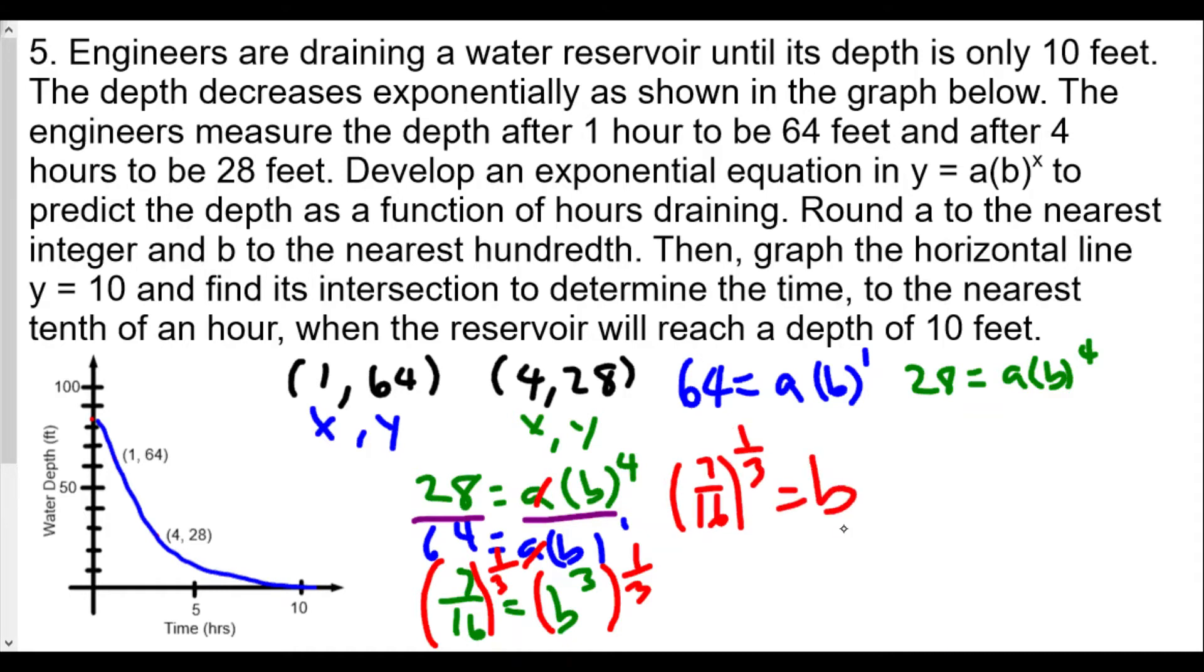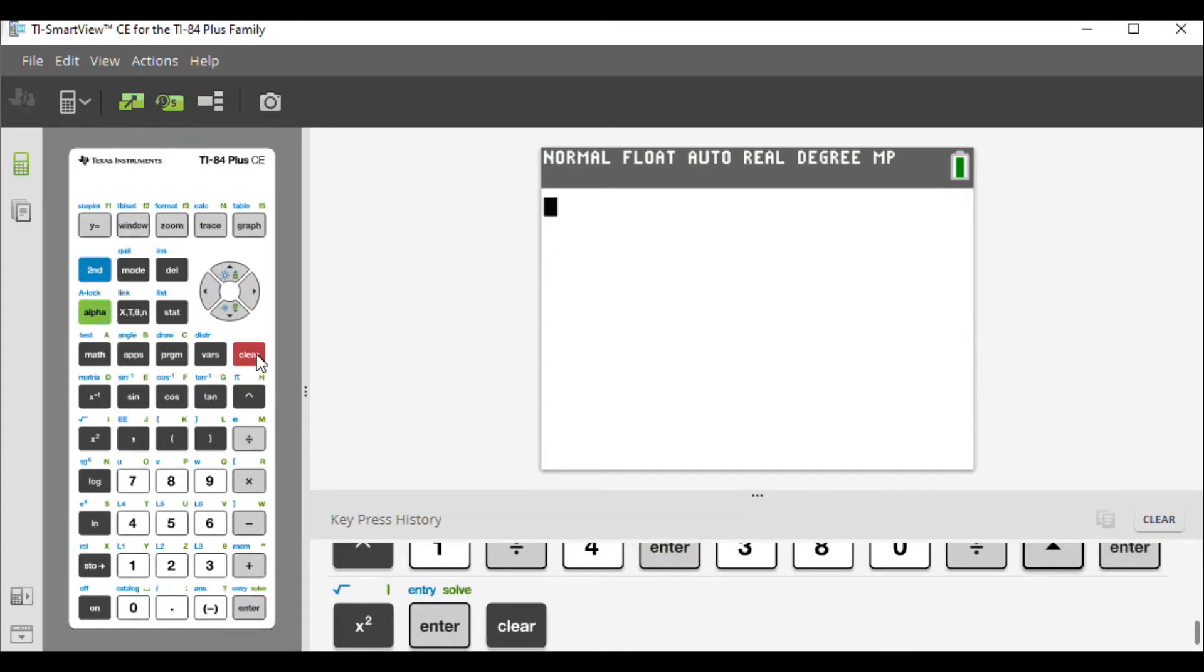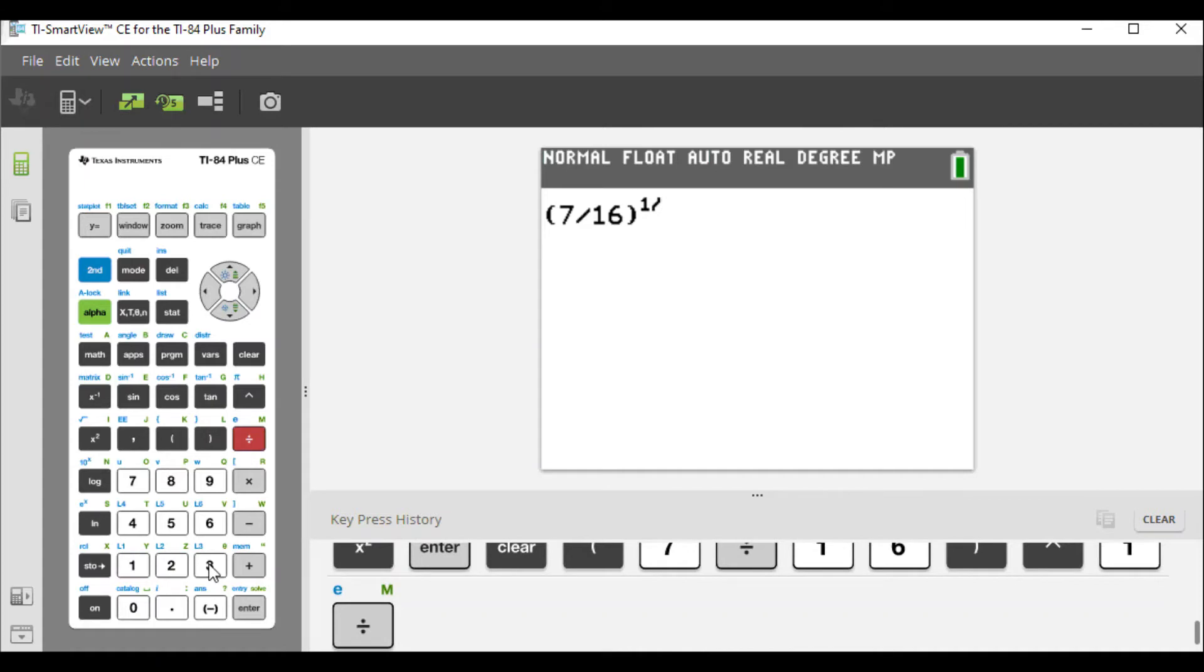So we're going to get (7/16)^(1/3) = b. This is the same thing as the cube root. Let's grab our calculator. We'll clear all stuff from before, and let's take 7 over 16, so 7 divided by 16, and we're going to raise this to the one-third power. We will find that our base is going to be 0.759147, which to the nearest hundredth will be 0.76.